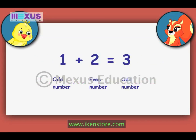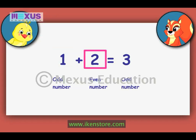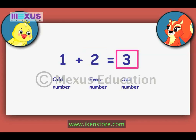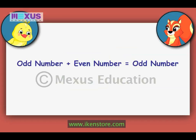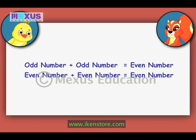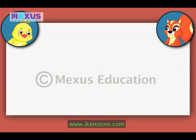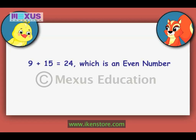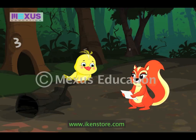Also remember, when you add an odd number like 1 to an even number like 2, you get 3, which is an odd number. So the addition of an odd and an even number gives an odd number. Also, addition of any two odd numbers or two even numbers gives an even number only. For example, 9 plus 15 gives 24, an even number, and 14 plus 28 gives 42, which is also an even number.